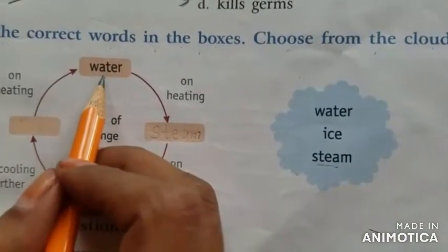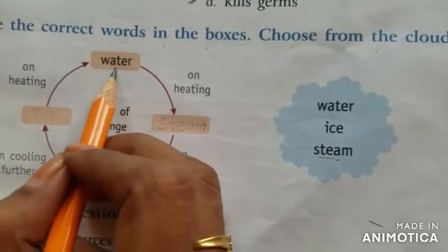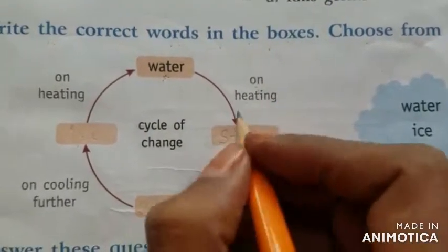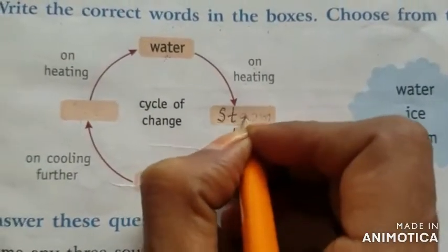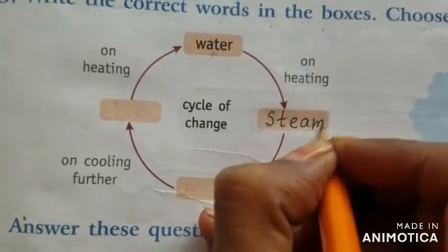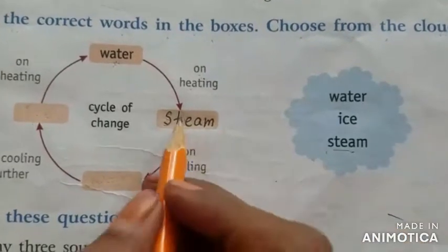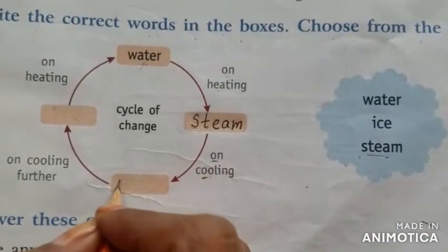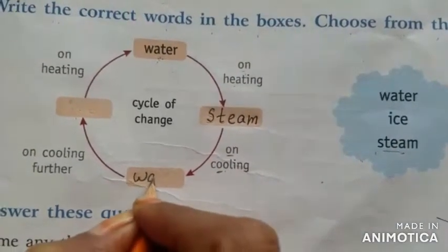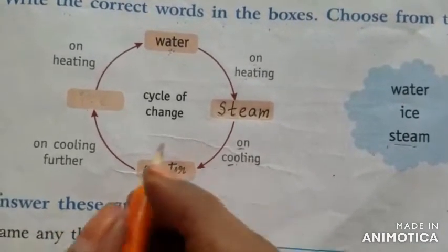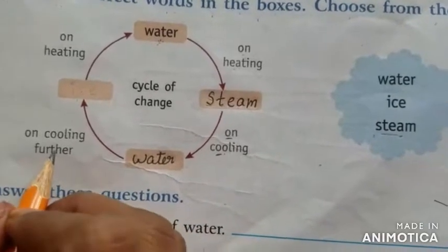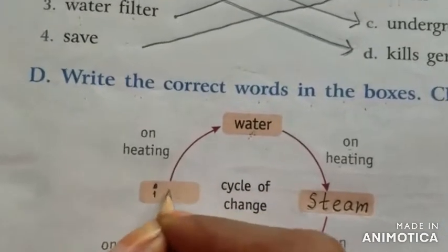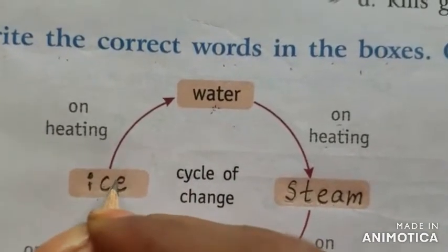Already they have given a word in the book — Water. Water on heating: what happens when we heat the water? It will change into steam. S-T-E-A-M, steam. When steam is cooled, it changes back into water. W-A-T-E-R. Water on further cooling will change into ice. I-C-E, ice.